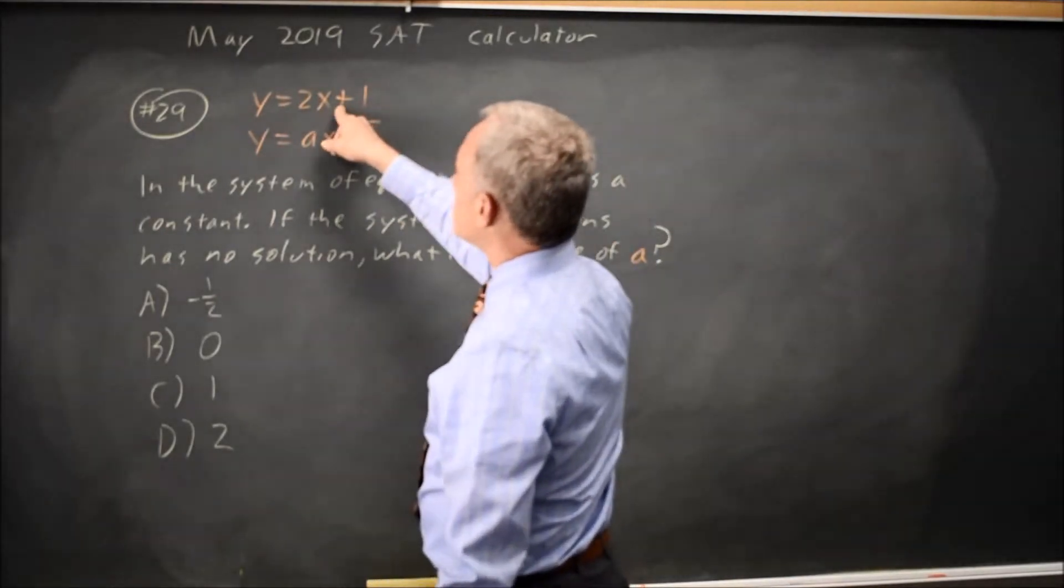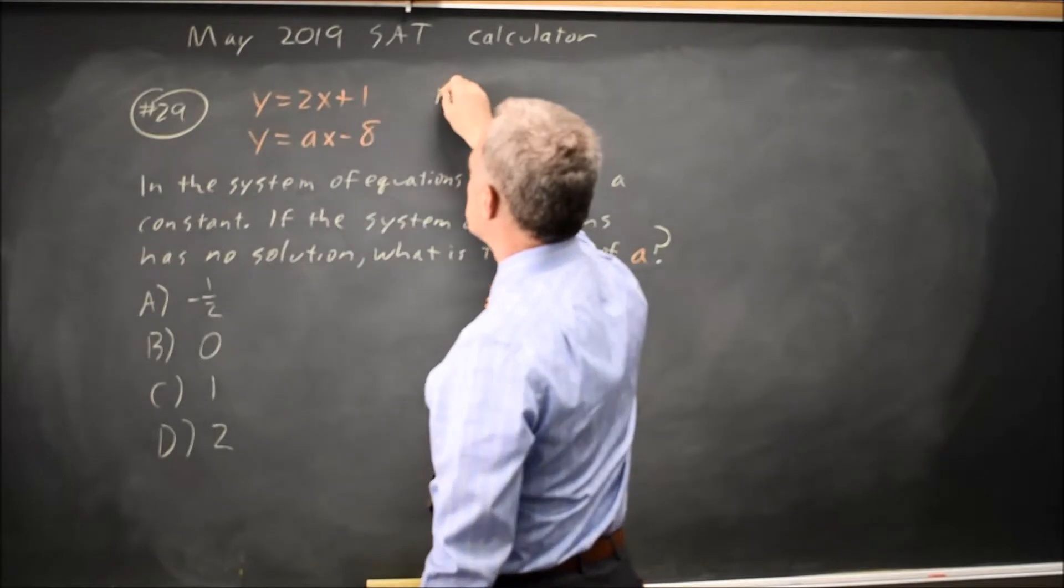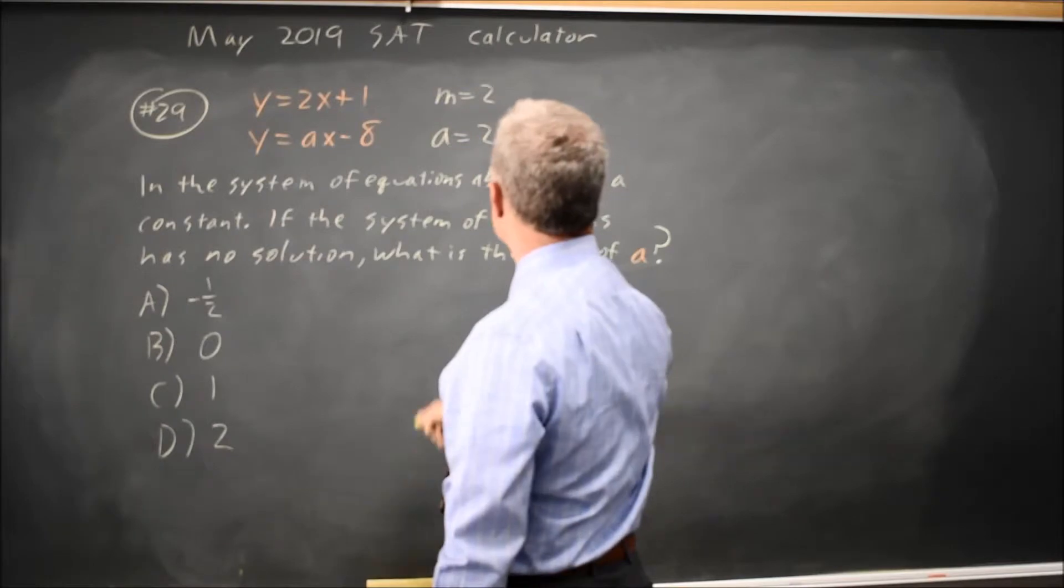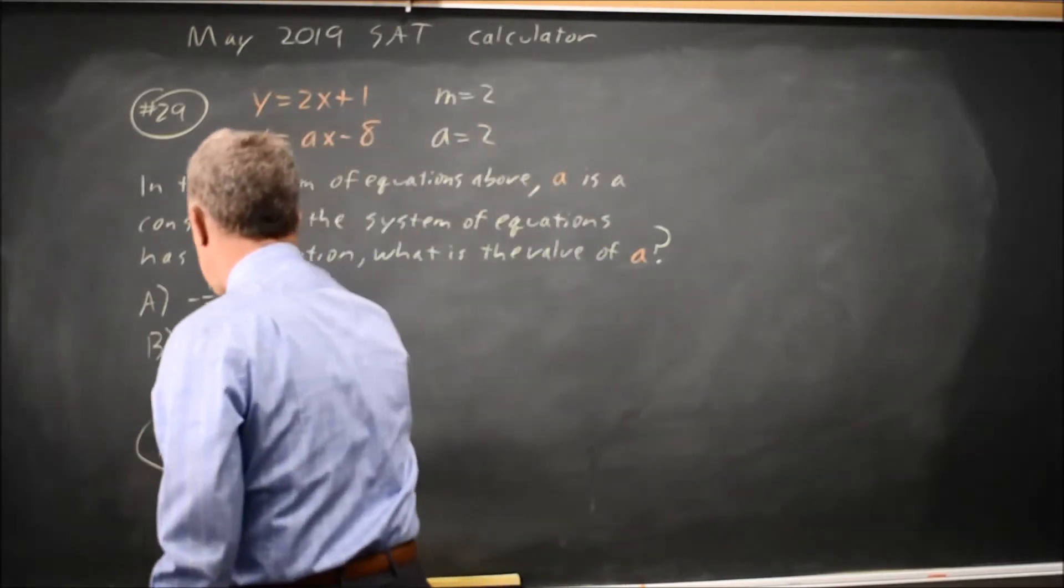So the slope of the first line is 2. That means the slope of the second line is also 2. The value of a is 2.